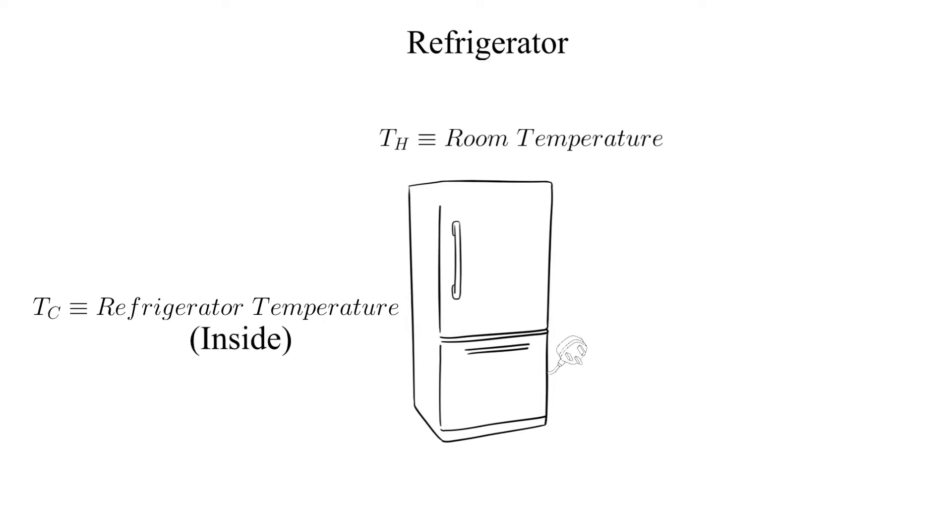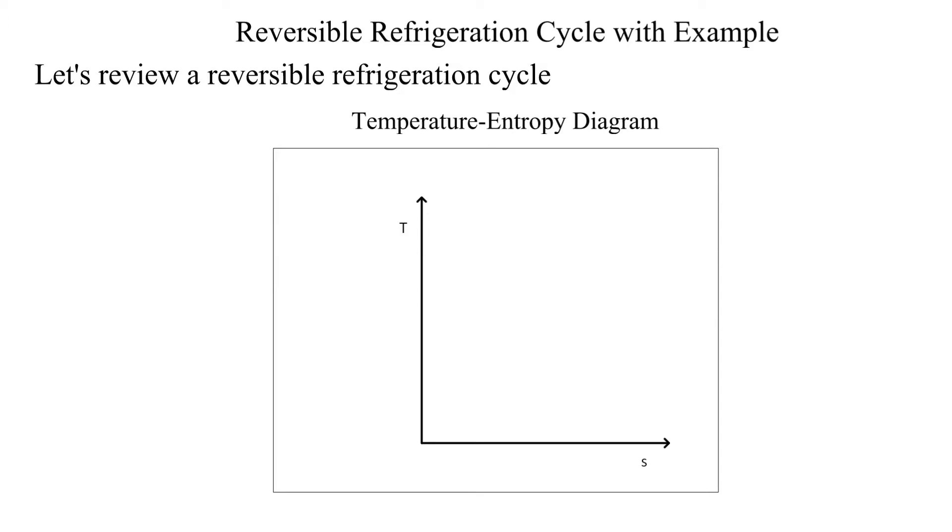Keeping this simple picture in mind will help you understand the reversible refrigeration cycle. Let's plot the four processes that make up the reversible refrigeration cycle on a temperature entropy diagram. Let's start with the isentropic compression process.